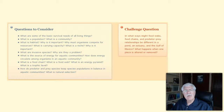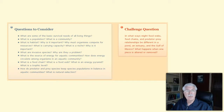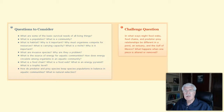What is the source of energy for aquatic communities? How does energy circulate among organisms in an aquatic community? What is a food chain? What's a food web? What's an energy pyramid? What's a trophic level? How do predator and prey species keep species populations in balance in communities? What is natural selection?